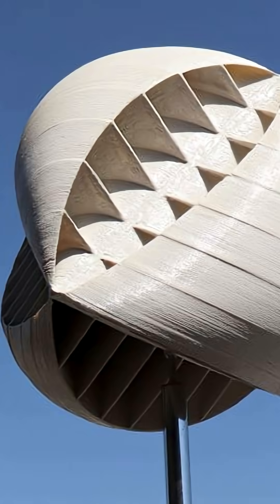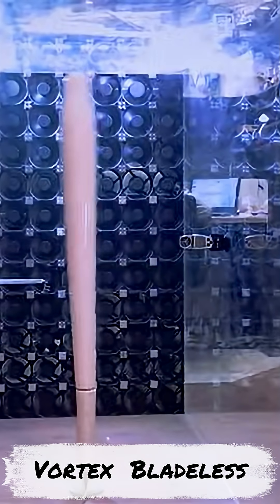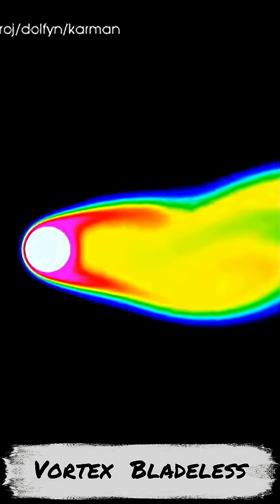Five wind turbines for the urban environment. Number one: Vortex Bladeless. This energy generator sways side to side using a phenomenon called vortex shedding.